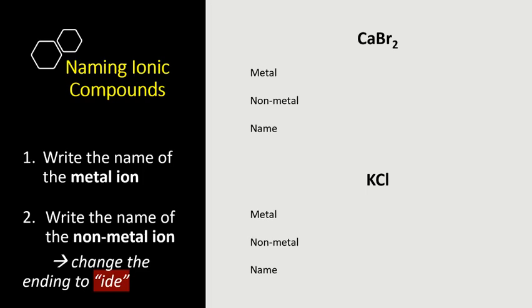Let's start naming ionic compounds with four simple and easy steps. Step number one is to write down the name of the metal ion. Let's work with the example of CaBr2. Ca is calcium.